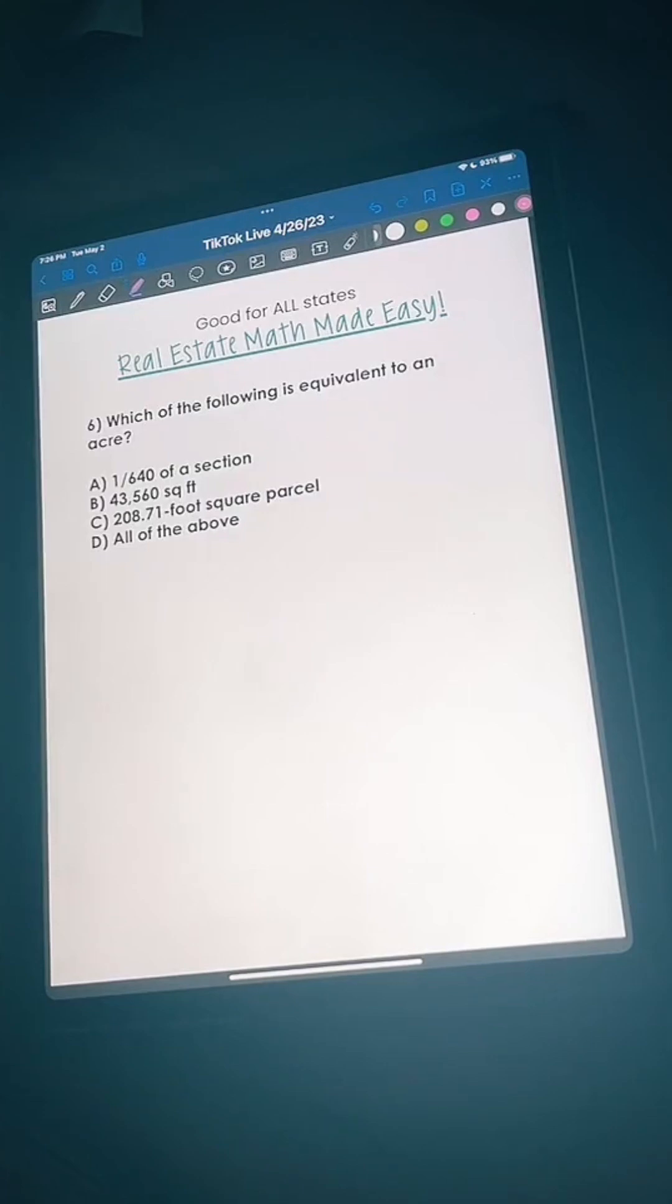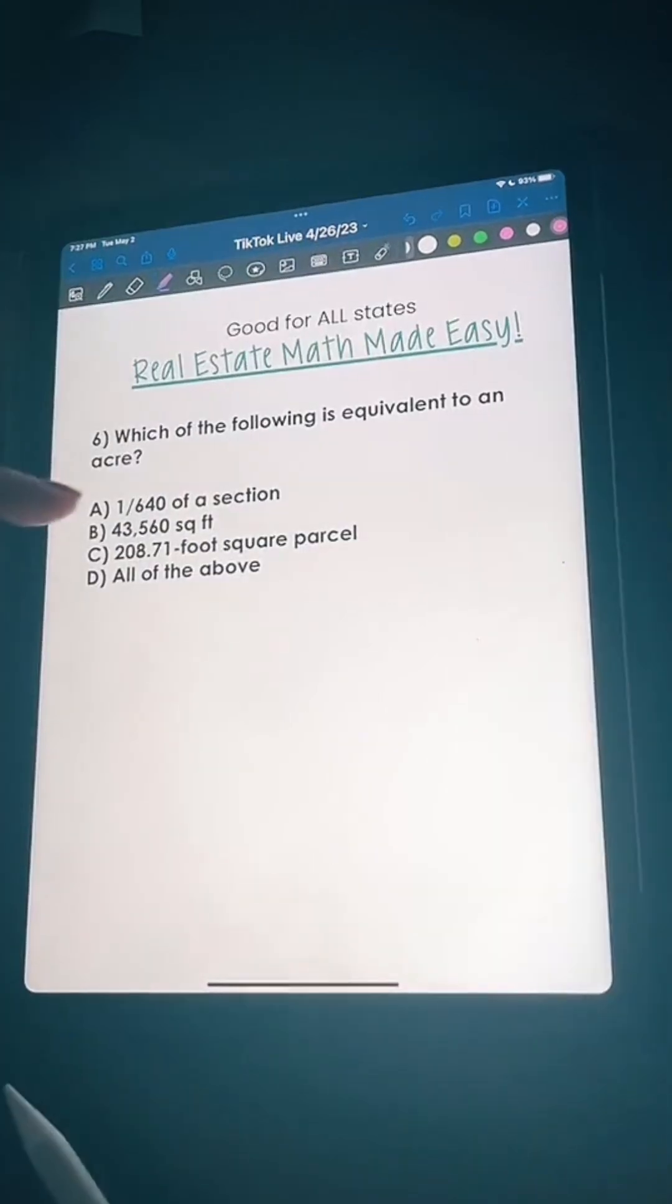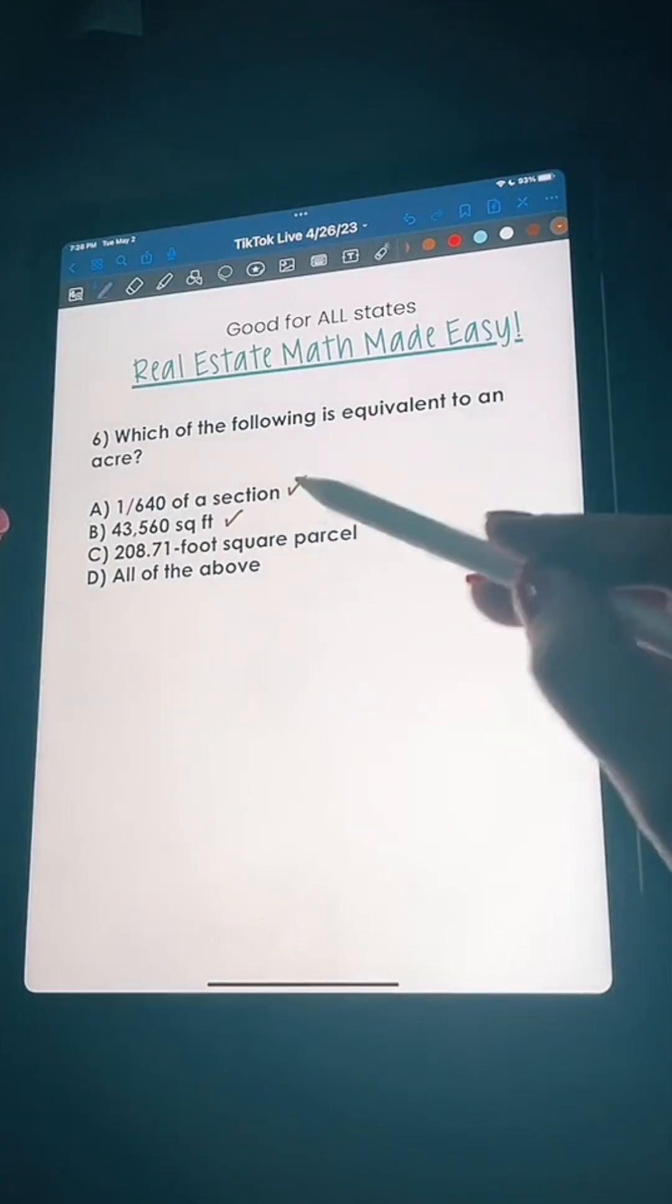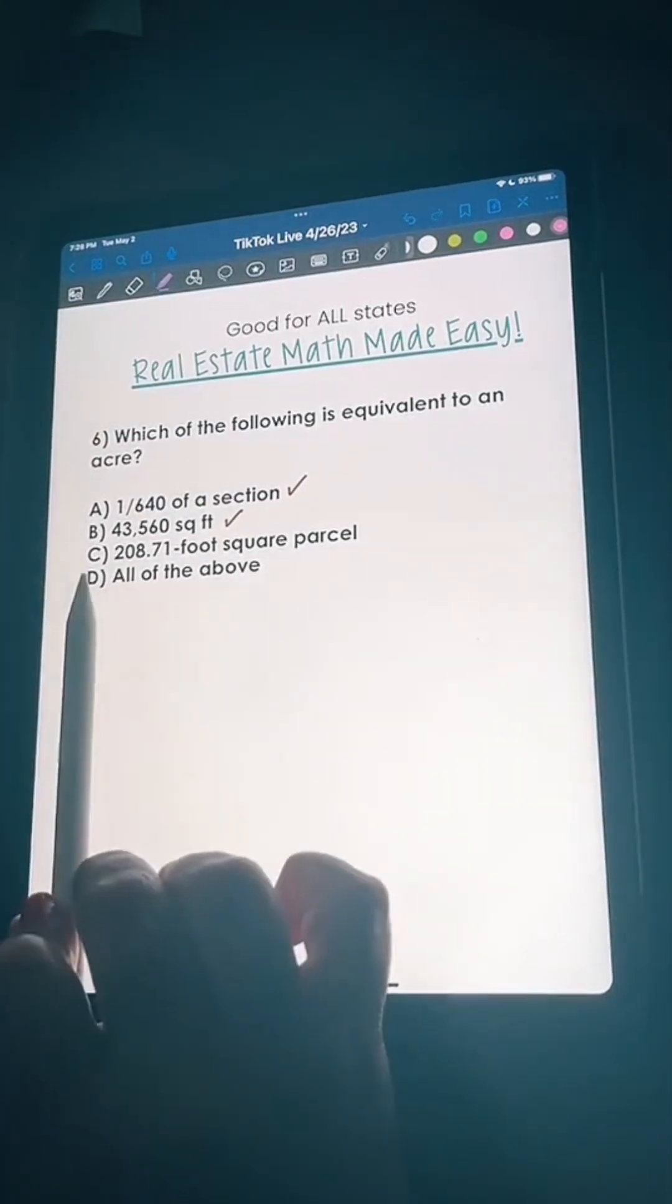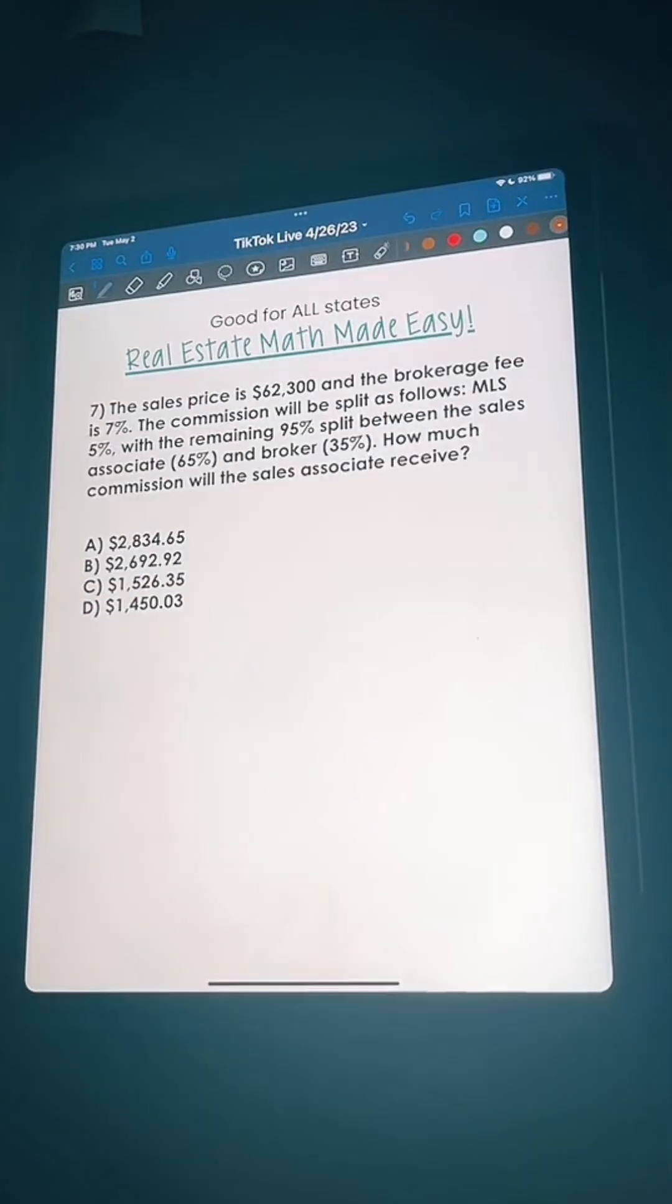I'm going to let you guys answer in the chat what you think this one is. 1/640th of a section, this definitely is equivalent to an acre. This for sure we know is equivalent to an acre. By process of elimination we can't answer both, so I'm going to say all of the above.